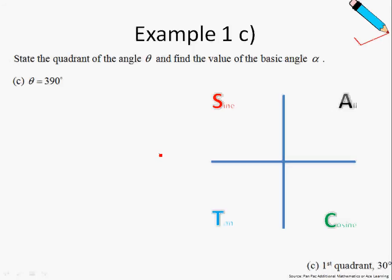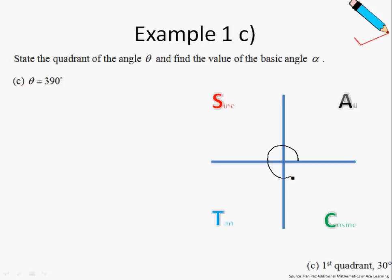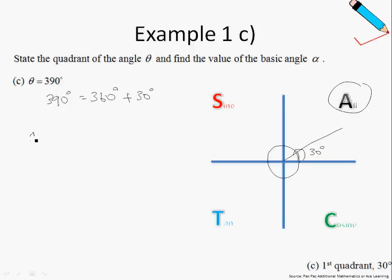Let's move on to example 1c. State the quadrant of angle theta and find the value of basic angle alpha. Theta is 390 degrees. Recall that we go in the anticlockwise direction — 90, 180, 270, 360 — and we are still moving on. So 390 degrees equals 360 degrees plus 30 degrees, meaning this angle here is 30 degrees. We are once again back in the all quadrant — the first quadrant.